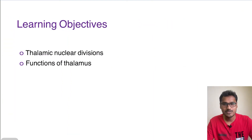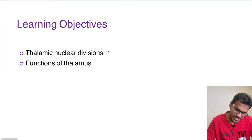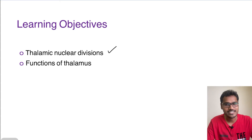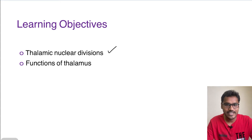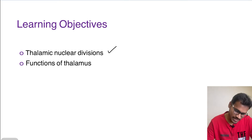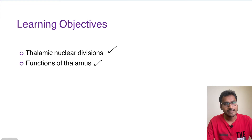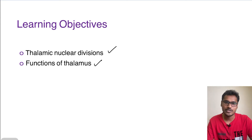The learning objectives for today are: we are going to understand different thalamic nuclear divisions. The divisions of thalamus are very vast and very important. We are also going to discuss the functions of the thalamus as a whole, and the individual nuclear division wise.